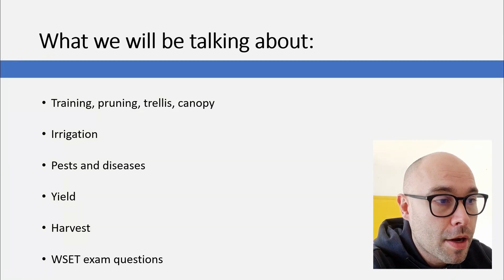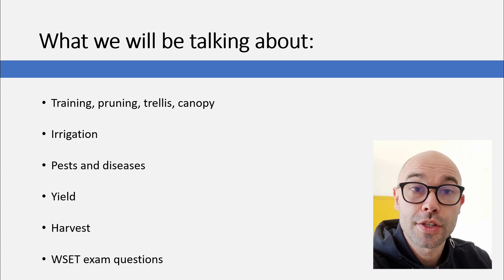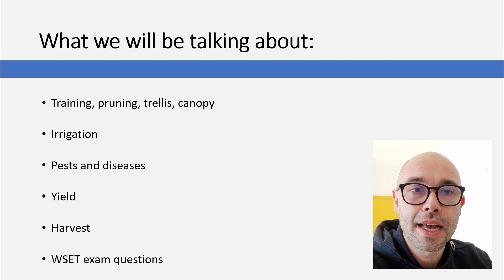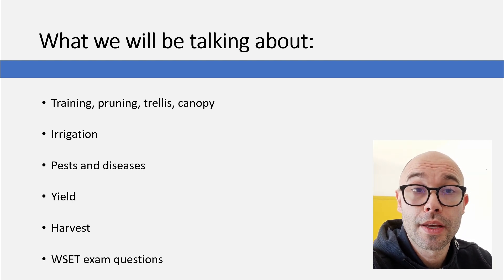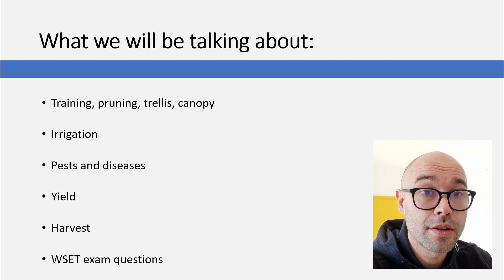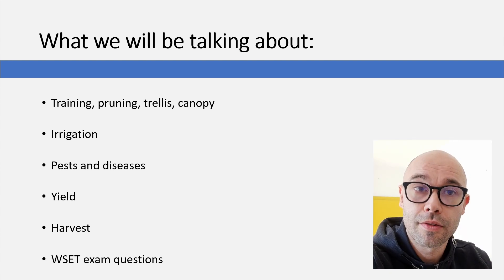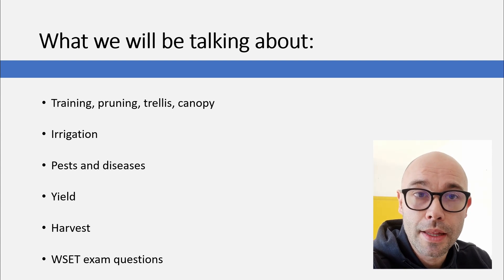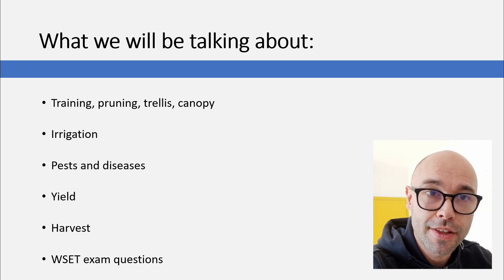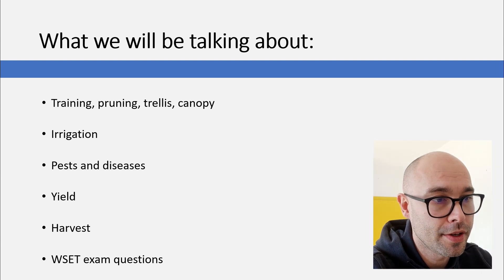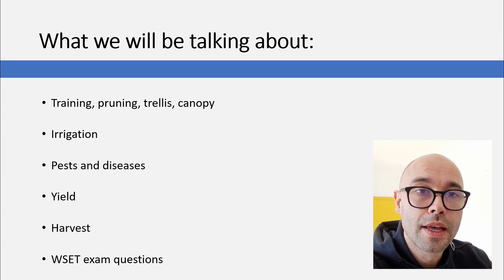So let's go! We'll be talking about training, pruning, trellis and canopy — I'll explain all these terms and what they mean. What you need to understand in the beginning is that the vine as a plant, its main purpose is not actually to grow healthy ripe grapes that we need in order to make wine. Its main purpose is actually to grow its woody and green parts, and this is not good because if the plant is focusing on the green and woody parts then it's not focusing on the ripening of the grapes. That's why it needs to be managed in order to redirect its resources into growing healthy ripe grapes — that's why you have viticulture. We'll also be talking about irrigation, pests and diseases, yield, harvest, and at the end we'll answer 10 WSET level 2 type questions.